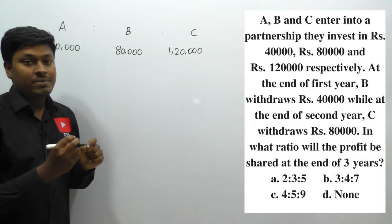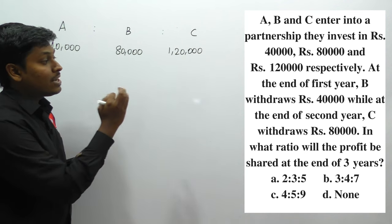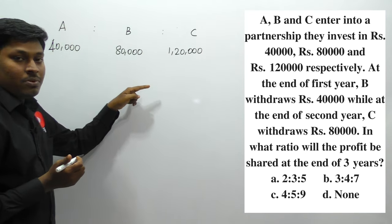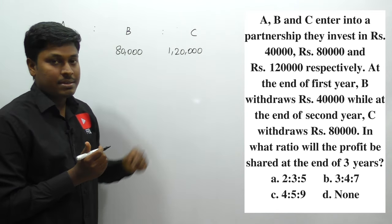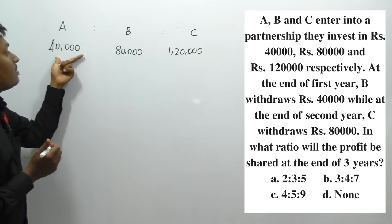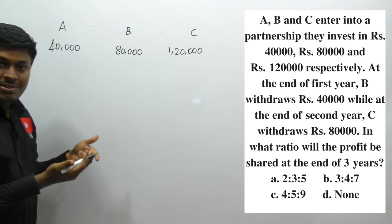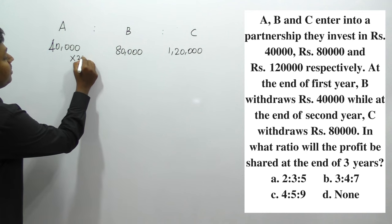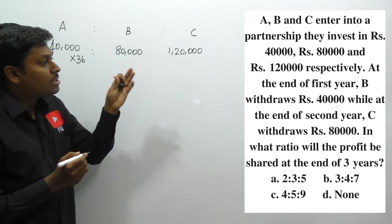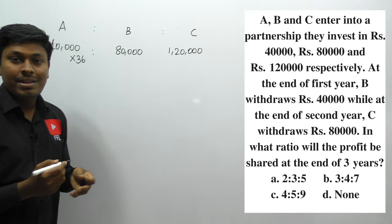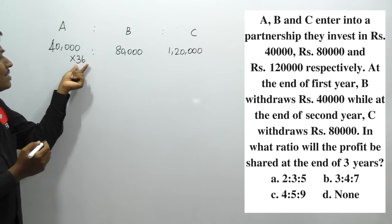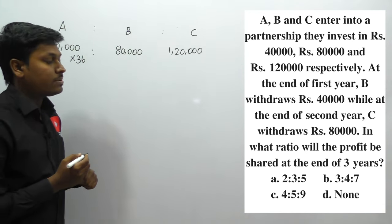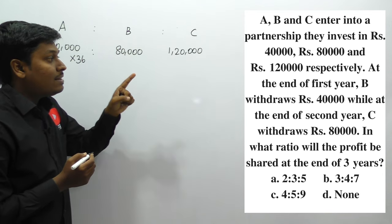Our target is to find the ratio of their shares for three years. We can surely say that from start to end, A is not withdrawing any amount, so A will be in the business for the complete 36 months. For the complete 36 months, person A is investing 40,000.